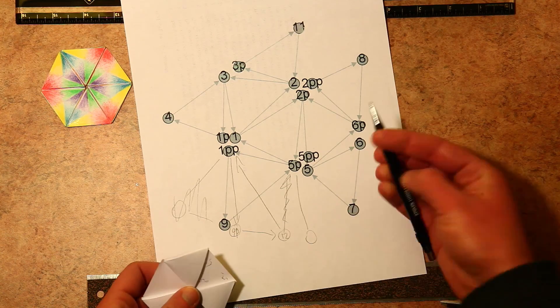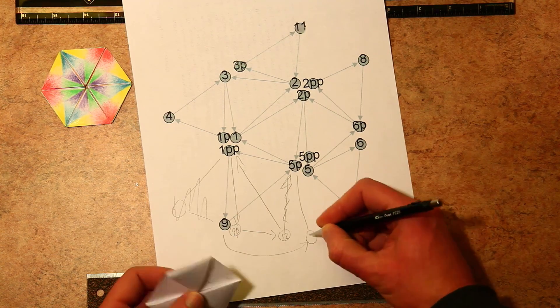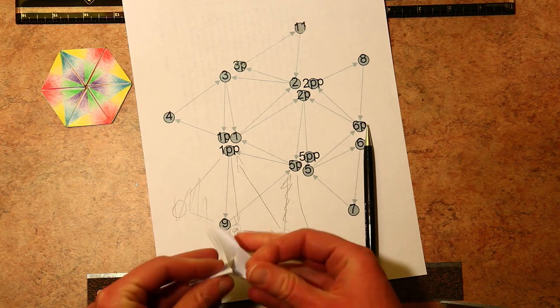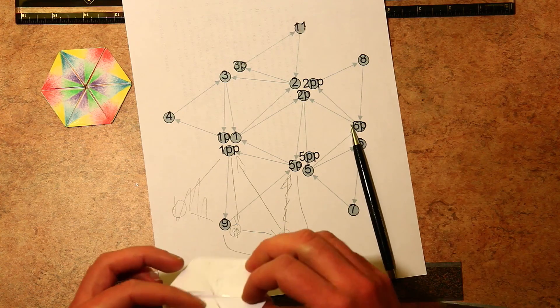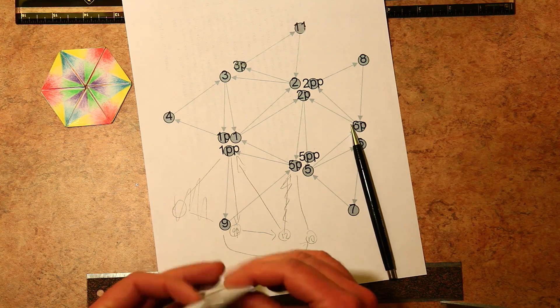And using that diagram, you can work out a path through the hexaflexagon that hits every state exactly once. And based on that path, you can start physically going through and marking the corners every time you flex it to get from one state to the other. Mark the corner with the appropriate color.